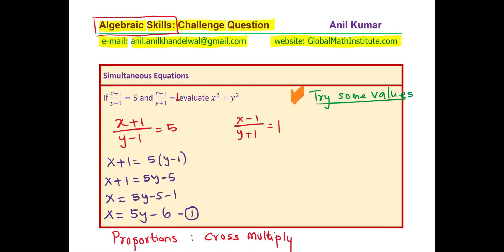Similarly, if I cross multiply the other equation, I get x minus 1 equals to y plus 1 and now I can substitute for x.